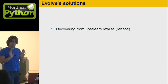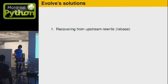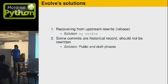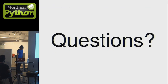Final summary: the three problems are recovering from upstream rewrite — solved by the hg evolve command; some commits are historical record and should not be rewritten — solved by phases, where evolve knows which phases are public and which are draft; and you want to be able to safely share commits across repos — that's done with obsolescence markers.